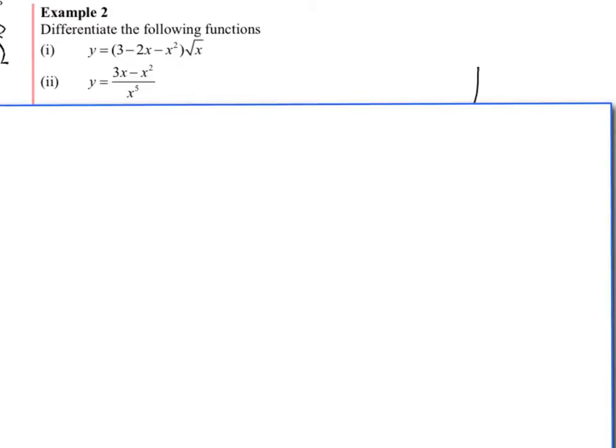Let's look at an example like this. Firstly, we need to put it in index form, so let's expand it out. So we've got y = 3√x - 2x√x - x²√x. We then need to put this in index form, so you've got 3x^(1/2) - 2, now this is 1 plus 0.5, so it's 1.5, take away 2 plus 0.5 is 2.5, so we'll write down 5/2.